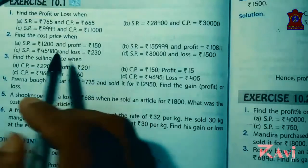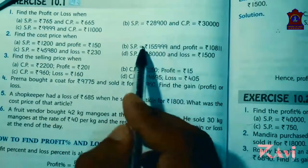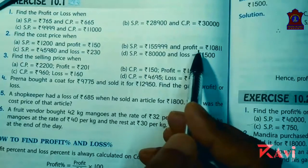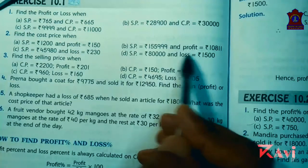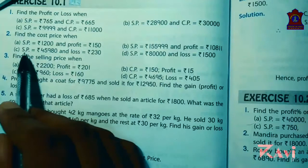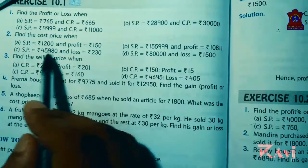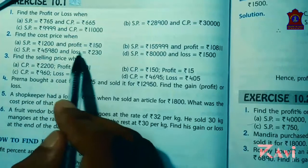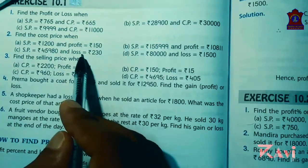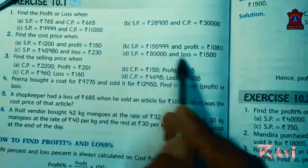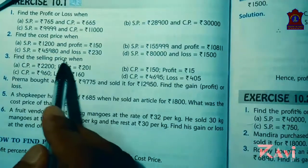Like this you have to find out the other questions. Here SP and profit is given, just find CP equals SP minus profit. Here SP and loss is given — to find CP you need to add: CP equals SP plus loss. You will be doing okay.